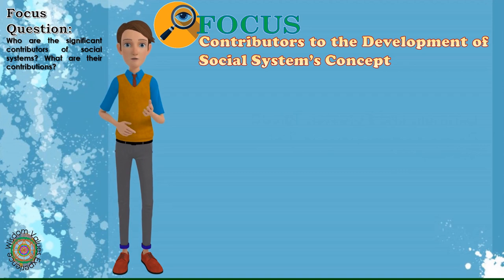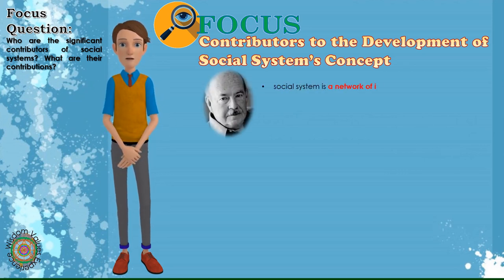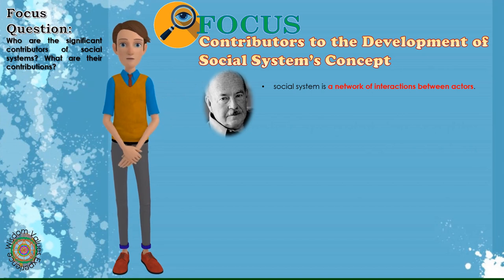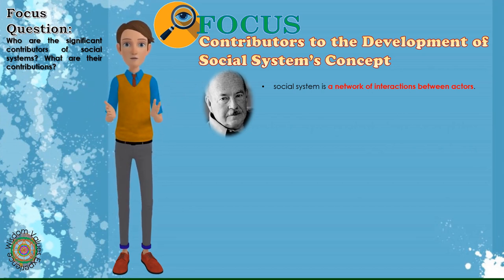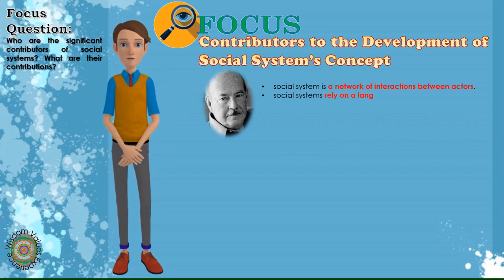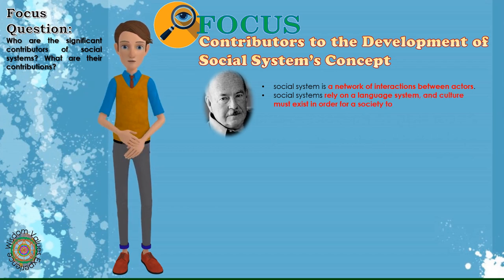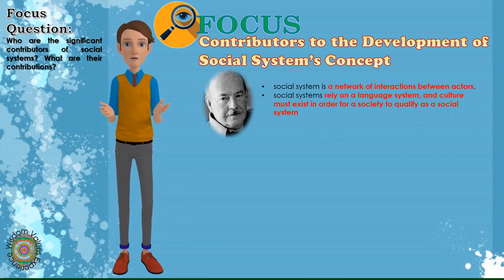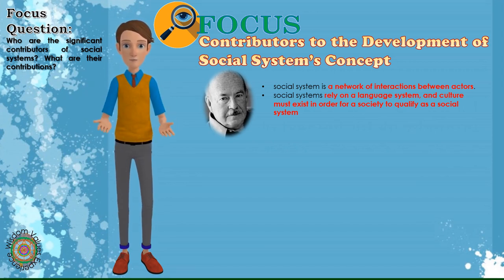Talcott Parsons developed the first systematic theory of social systems as part of his agile paradigm. He defined a social system as only a subset or subsystem of action theory. Parsons organized social systems in terms of action units, with one unit being one action performed by an individual. A social system, according to him, is a network of interactions between actors. According to Parsons, social systems rely on a language system, and culture must exist in order for a society to qualify as a social system. Parsons' work laid the groundwork for the rest of the study of social systems theory and sparked debate about what framework social systems should be built around, such as actions, communication, or other relationships.